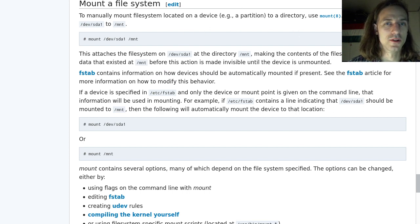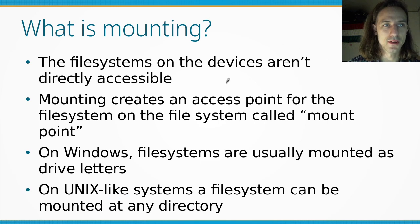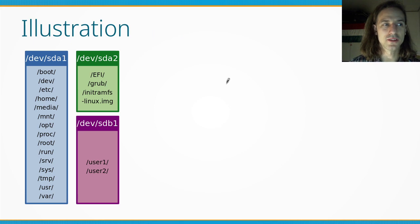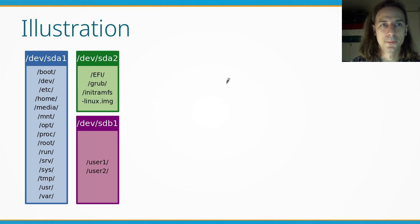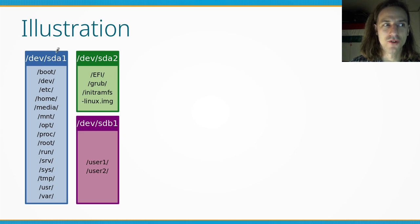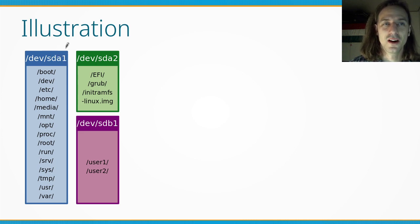To illustrate: as we talked about in the last video, the different hard drives and solid state drives in our computer appear as devices — for example, drives A and B. They are located in the /dev directory, which stands for device, and these are called block devices. The different partitions on these drives are numbered, like /dev/sda1, /dev/sda2, /dev/sdb1, and so on.